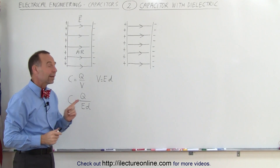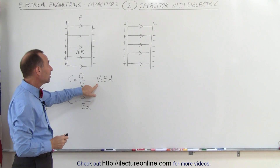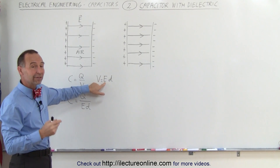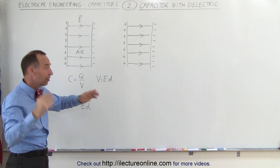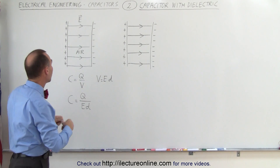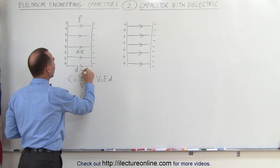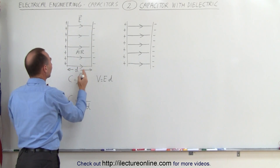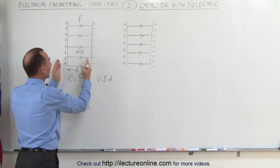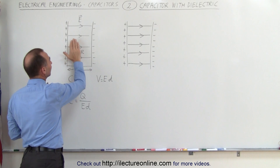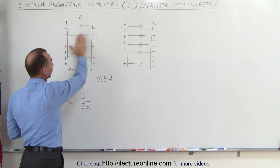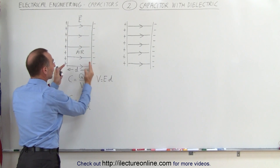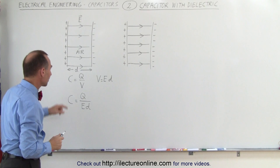We also know that the voltage can be defined as being equal to the strength of the electric field times the distance. So if we have the distance between the plates right here, we can then say that the voltage across the plates is defined by taking the strength of the electric field between the plates and multiplying it times the distance.